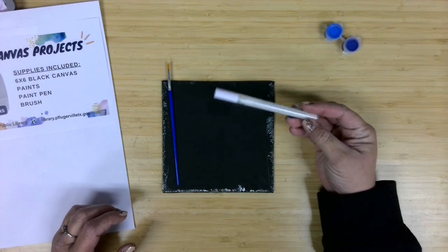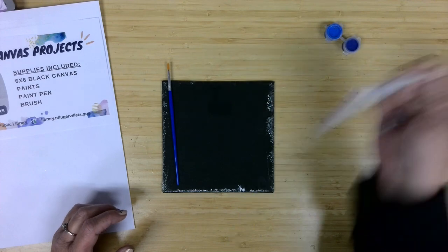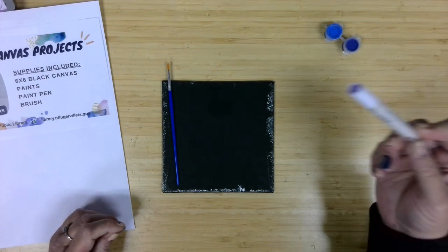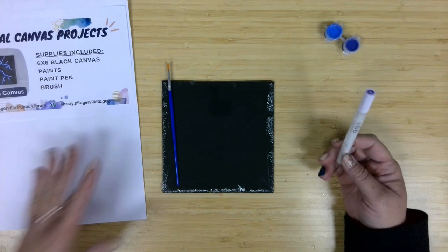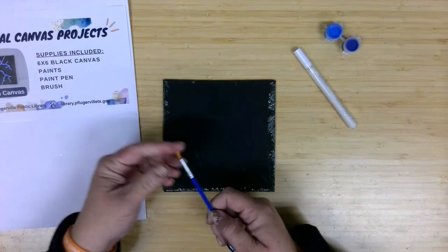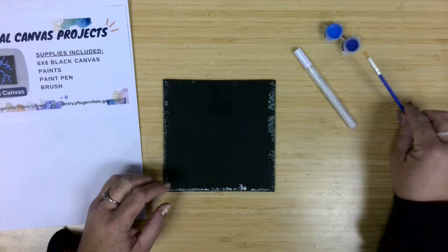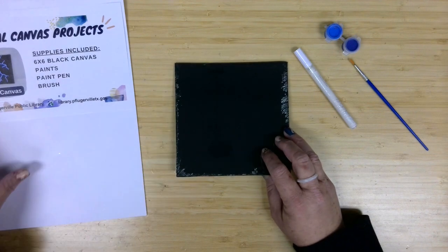We've also provided an acrylic white paint pen that you'll definitely want to shake up and prep. You'll want to have scrap paper with you, or really just your envelope will be fine. A medium round brush here, and then our six by six black canvas, and these should be wrapped in plastic.